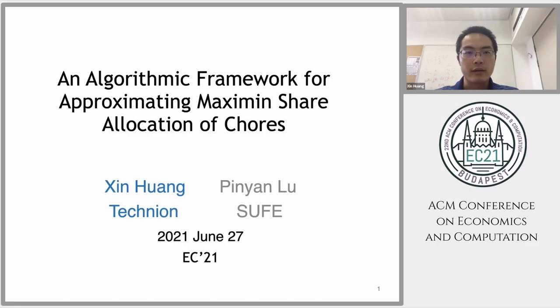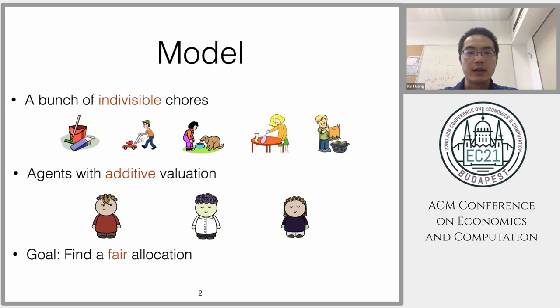I'm talking about the algorithm framework for approximating maximum share allocation of chores. Our model is that we have a bunch of indivisible chores, like household chores, where each chore can be allocated to at most one person, and each person will have an additive valuation of those chores.